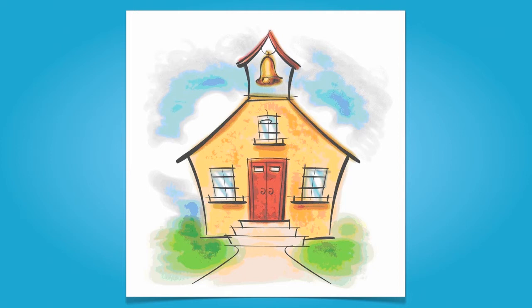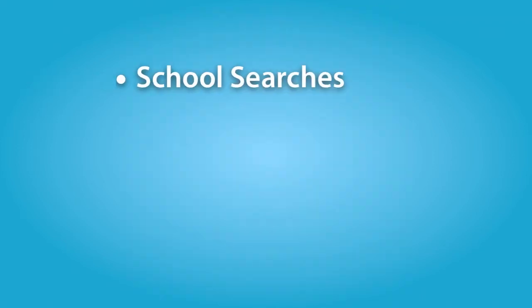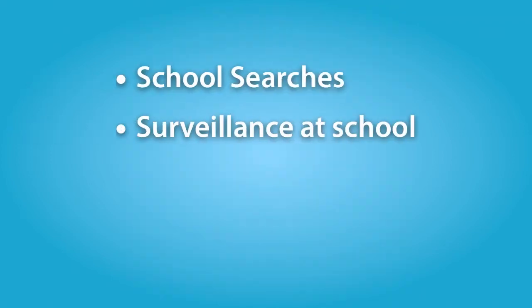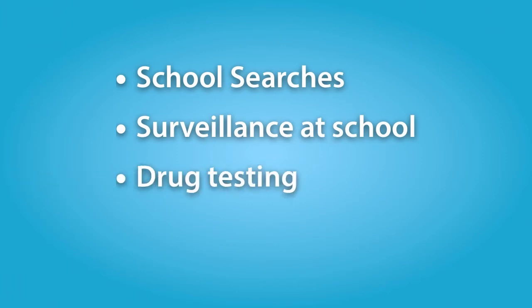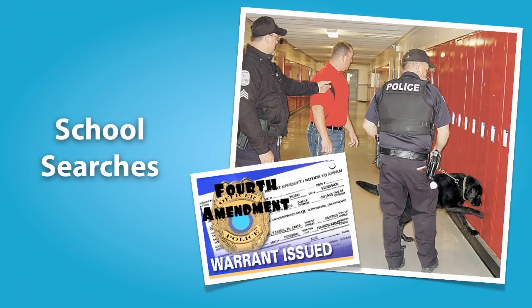The privacy rights of students are usually implicated in one of four contexts: school searches, surveillance, drug testing, and student records. Let's briefly review the current state of the law in each of these four areas. First, school searches.